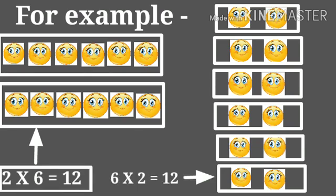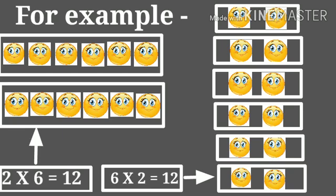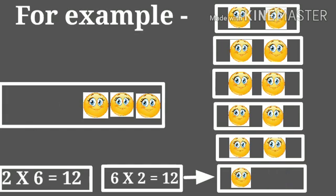It means two times six is equal to six times two. We changed the order of the factors and still the product remains the same. That is twelve. Two sixes are twelve and six twos are also twelve.